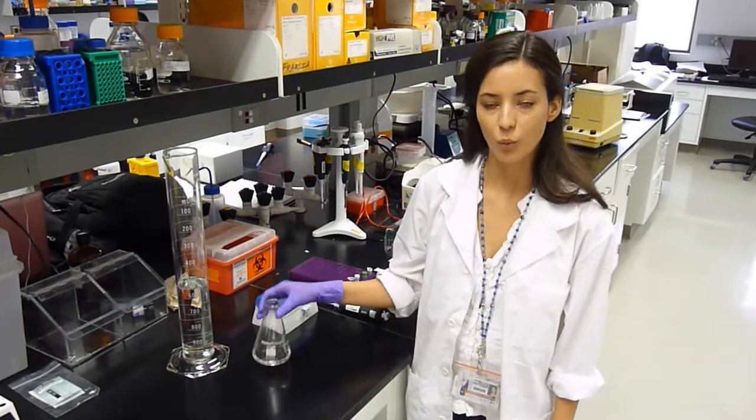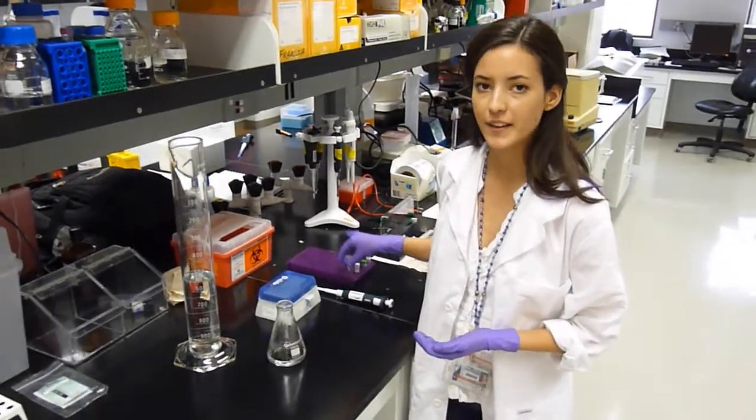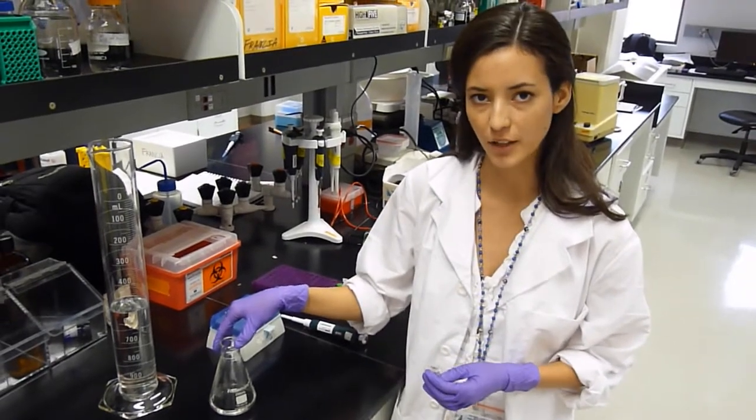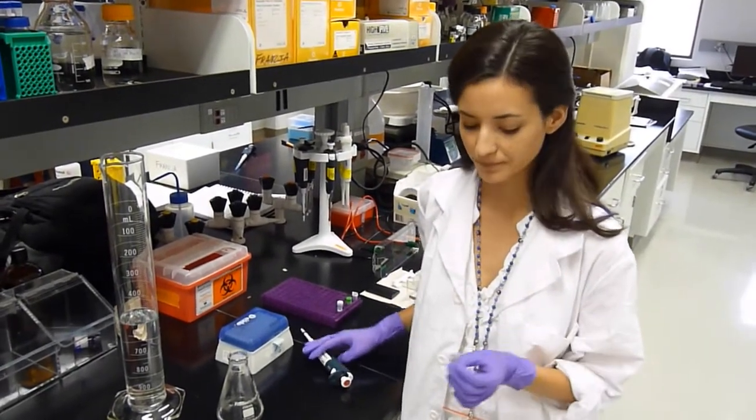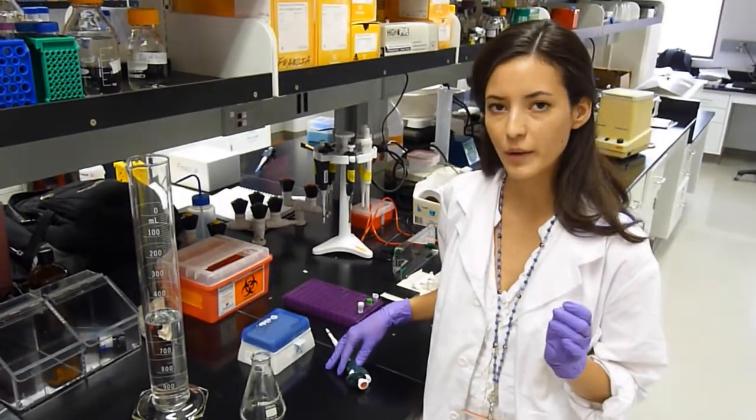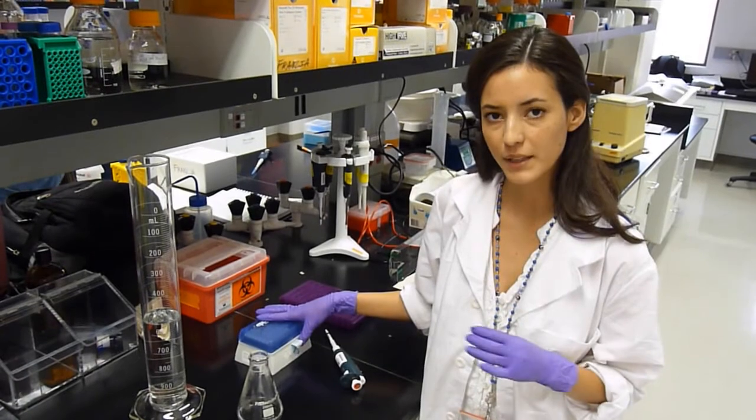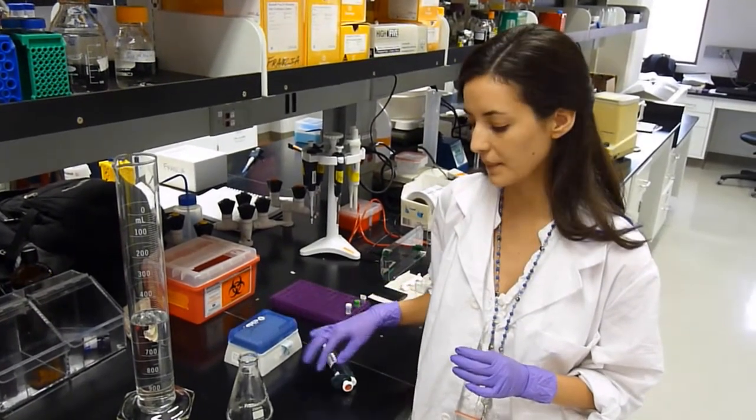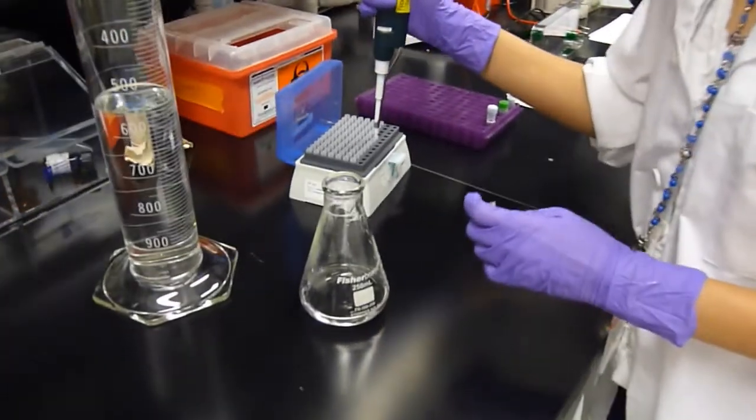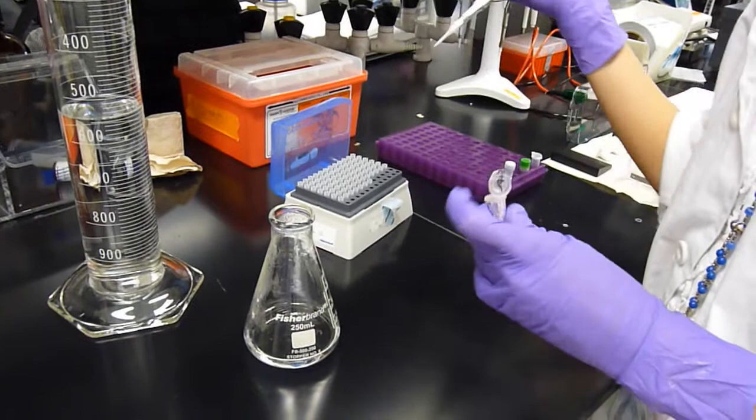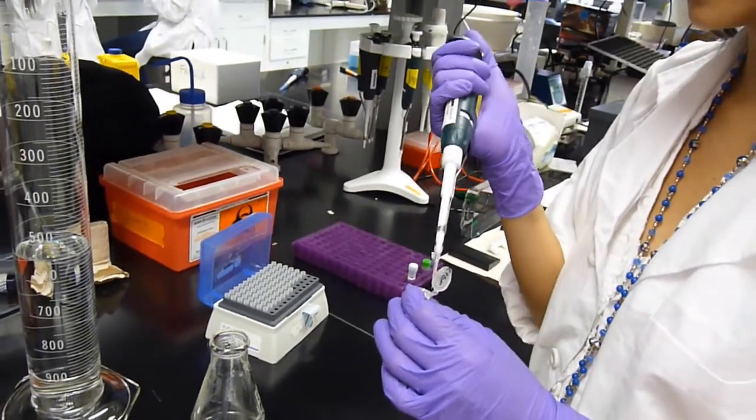After you have melted your agarose, wait for it to cool to 60 degrees Celsius or until it's warm to the touch. Now, we're going to add ethidium bromide into our agarose solution to be able to visualize the DNA in our gel. You have to be careful with ethidium bromide because it is highly mutagenic, so when handling this compound, always wear gloves. For this, we're not going to need any more than 5 microliters, and right now I'm just going to add 4. A helpful tip that I learned is that ethidium bromide will load itself into the agarose solution. All you have to do is place your loaded tip into the solution and wait for it to dispense.